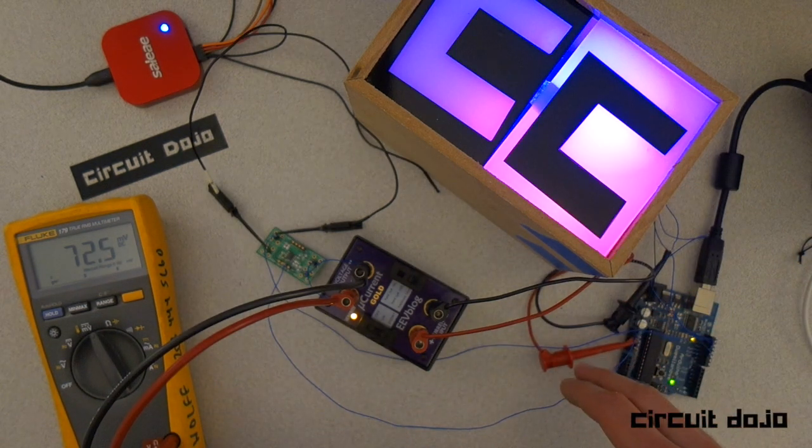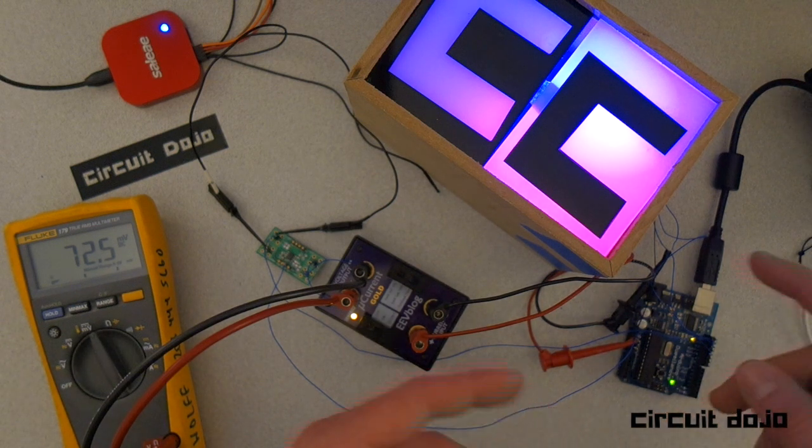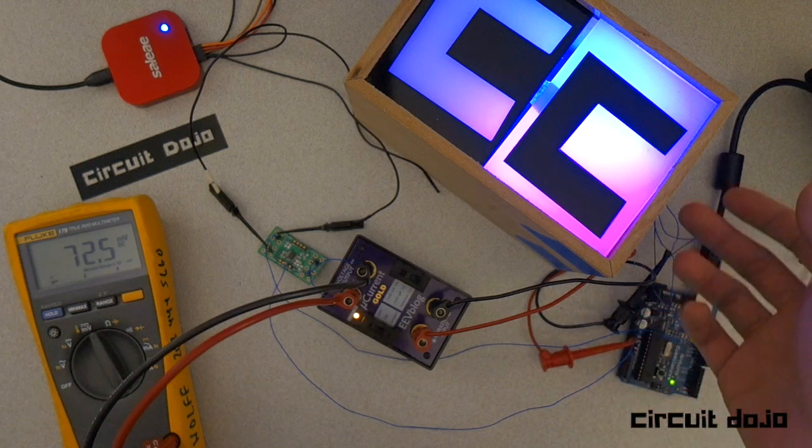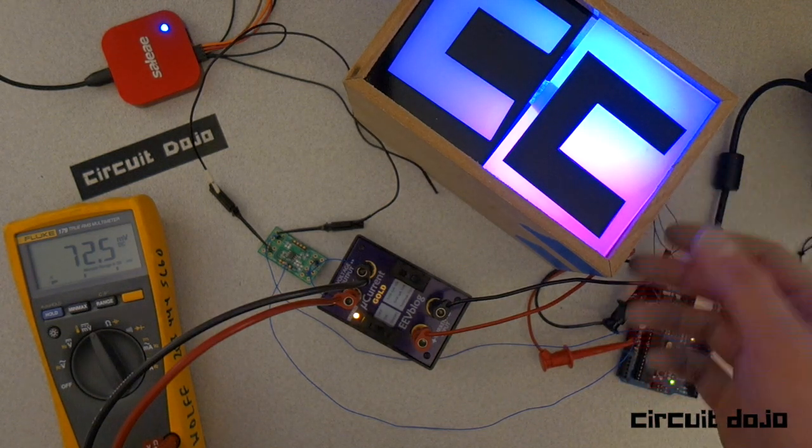I've connected the first lead from the 5V supply on the Arduino into the input of the microcurrent gold. The second lead goes to the MOSFET that's feeding the LED pin for the LED driver inside the box here.